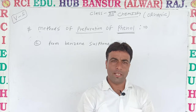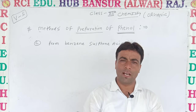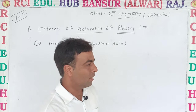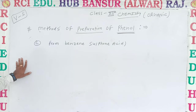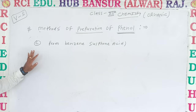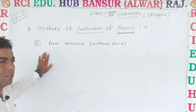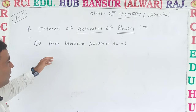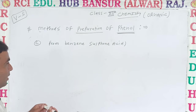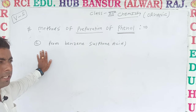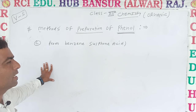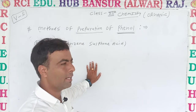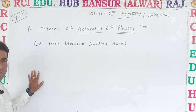Welcome dear students to RCAE Education Hub, Bansur. In previous classes we studied about phenol formation methods — that is continued. First we saw the laboratory methods: from diazonium salt and also from chlorobenzene.